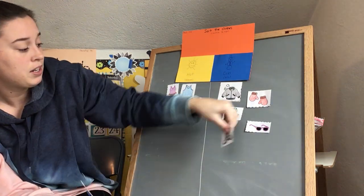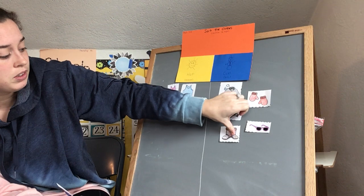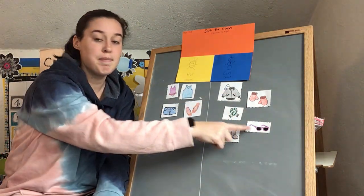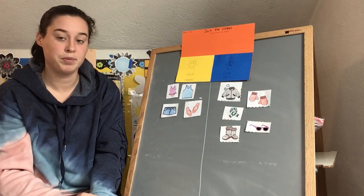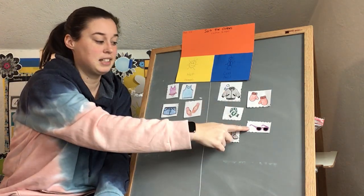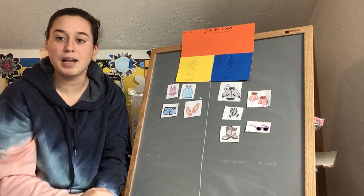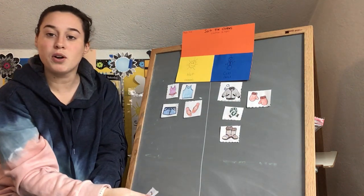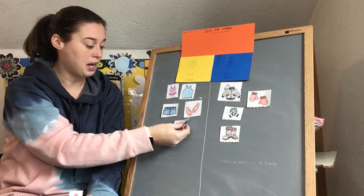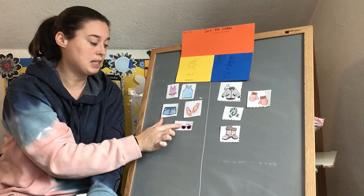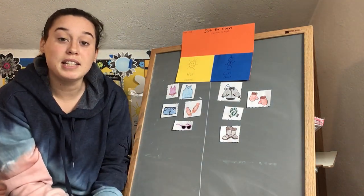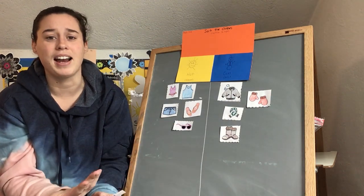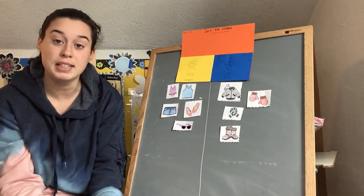And look, friends, I made a mistake. Where did I put my sunglasses? I said we could put them in either side, and look, I did. I put them in the cold side. But we need to switch that and fix our mistake and put it in the summer side, right? The hot. Because we wear sunglasses more when it's hot outside. Whoops.